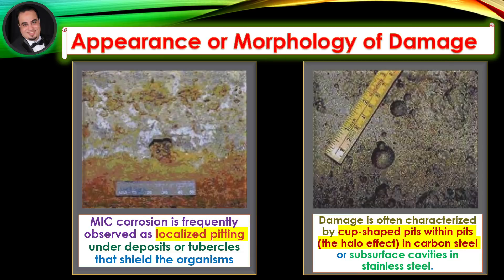Appearance or morphology of damage. MIC corrosion is frequently observed as localized pitting under deposits or tubercles that shield the organisms. Damage is often characterized by cup-shaped pits within pits — the halo effect — in carbon steel, or subsurface cavities in stainless steel.